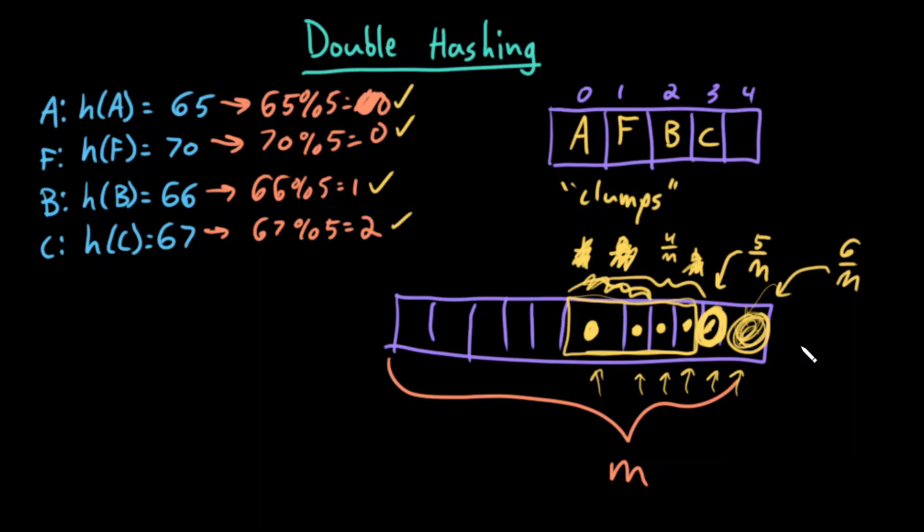To get over this issue, people implement what's called double hashing. In my original example, the moment we had an insertion that hit an already occupied slot, we just went one index over. With double hashing, instead of having just our single hash function, we also define a second hash function, which I'll denote h2(x). Our first hash function tells us the insertion site. And the second hash function tells us the skip.